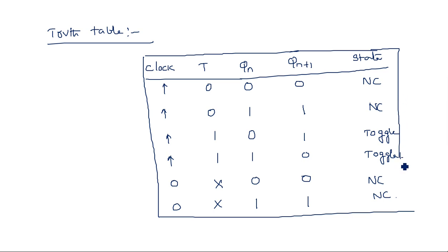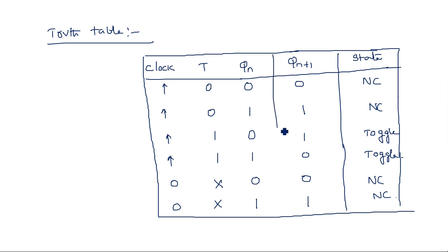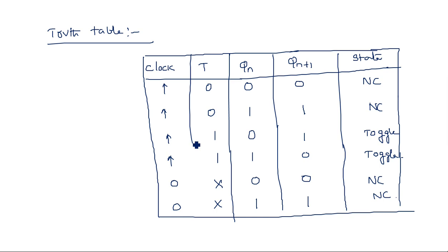The T flip-flop, known as the toggle flip-flop, complements the output on each rising edge of the clock. When you operate the T flip-flop continuously, the output will appear as 1, 0, 1, 0, 1, 0 — toggling every clock cycle. That is why it is called the toggle flip-flop. Thank you.